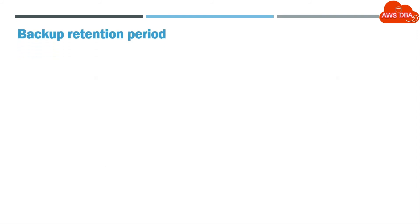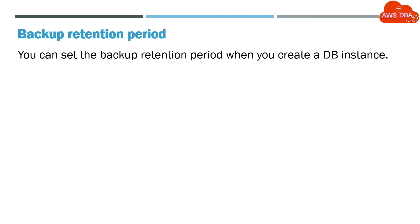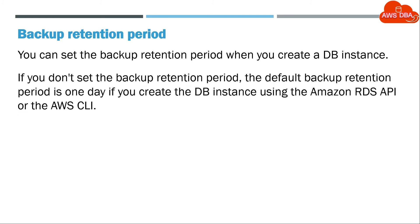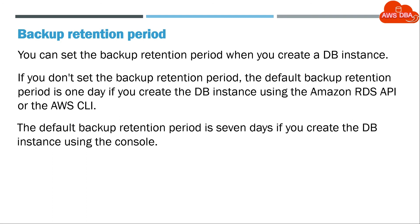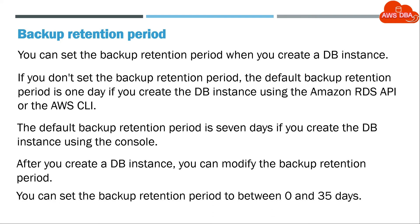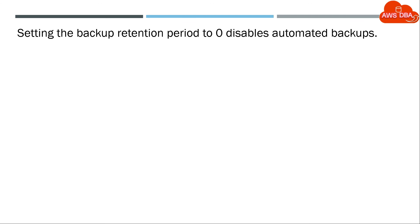Backup retention period: You can set the backup retention period when you create a DB instance. If you don't set the backup retention period, the default backup retention period is one day if you create the DB instance using the Amazon RDS API or the AWS CLI. The default backup retention period is 7 days if you create the DB instance using the console. After you create a DB instance, you can modify the backup retention period. You can set the backup retention period to between 0 and 35 days. Setting the backup retention period to 0 disables automated backups.